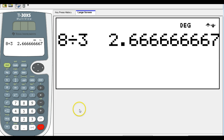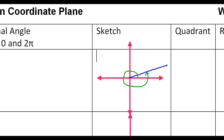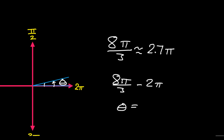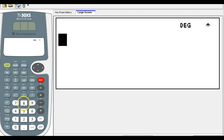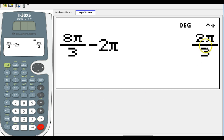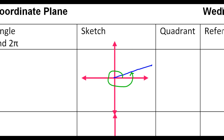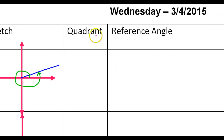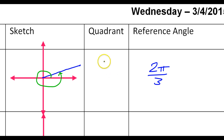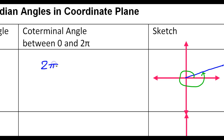I could cheat if I were allowed to use my TI-30XS multi-view — and I don't think you will be allowed to use it on the next quiz, but eventually you will be. I could go 8 pi over 3 and then minus 2 pi. So that reference angle is going to be 2 pi over 3. The reference angle is 2 pi over 3. This is in quadrant 1, and that's also our coterminal angle: 2 pi over 3.